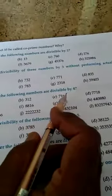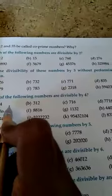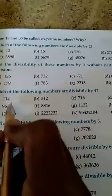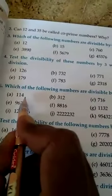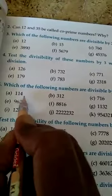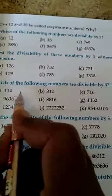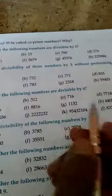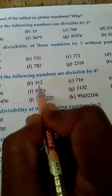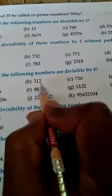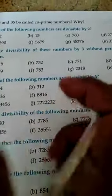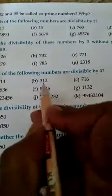Now question number 5: which of the following numbers are divisible by 4? The divisibility rule for 4 is: check the tens place and ones place number and divide by 4. For 114 — when you divide 14 by 4, it is not exactly divisible because there is a remainder. So 114 is not divisible by 4. Now 312 — the last two digits are 12, and 12 is divisible by 4: 4 times 3 is 12, remainder 0. So 312 is also divisible by 4.